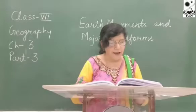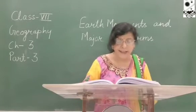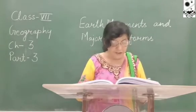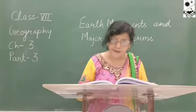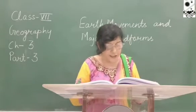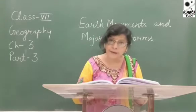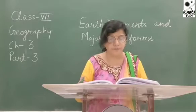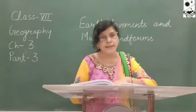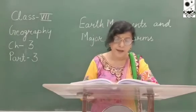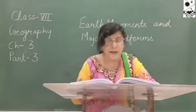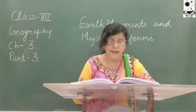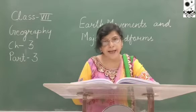Now let us learn about the landforms produced by the agents of Gradation. Degradation means the wearing down of the land surface, and Aggradation means the deposition of eroded materials to form a new landform. Rivers are the most important agents of Gradation. The valley formed by a river is narrow and shaped like the letter V — hence it is called a V-shaped valley.